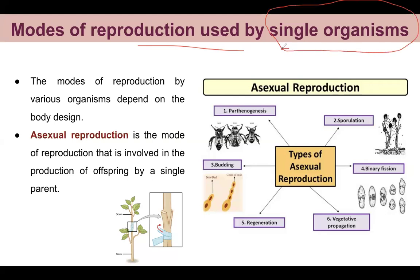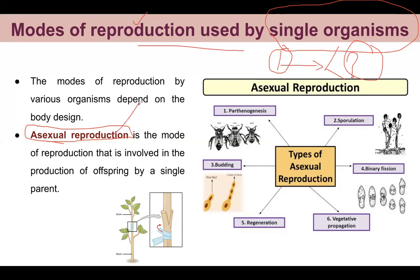Is it possible for only one organism to produce offspring? Yes, it is very much possible, and this is called asexual reproduction. In asexual reproduction, a single parent produces new offspring. Only one parent is involved — whatever reproduction happens with a single parent, we call it asexual reproduction.